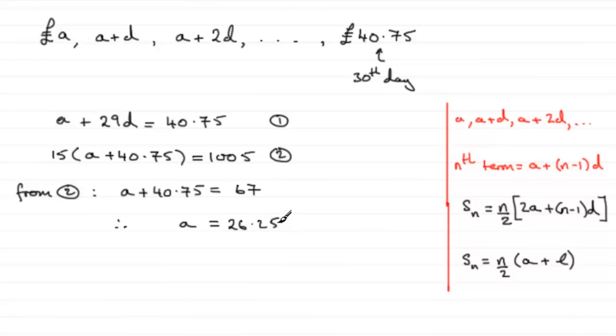And to get D, all I need to do is substitute this value back into equation one. So if I sub into one, just give a note there for the reader. Then put that back into there. We've got 26.25 plus the 29D equals the 40.75.